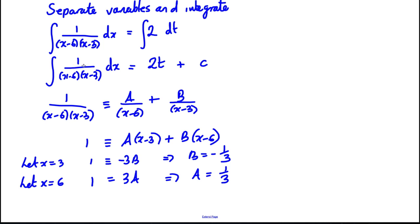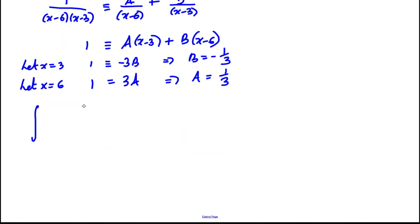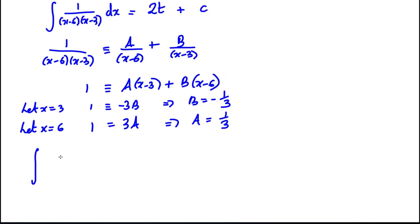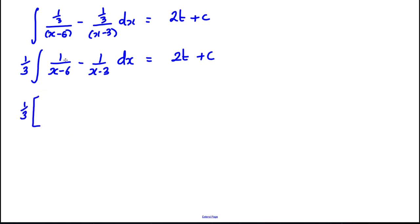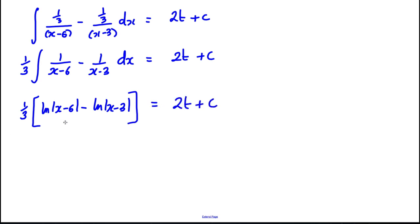Now I'm ready to replace this integral. It will be the integral of (1/3)/(X − 6) minus (1/3)/(X − 3) with respect to X, equals 2T + C. It's neater to factorise out the third — these are now two simple natural logs. So keeping the 1/3, in square brackets: ln|X − 6| minus ln|X − 3|. Combining those logs gives (1/3) ln|(X − 6)/(X − 3)| equals 2T + C.